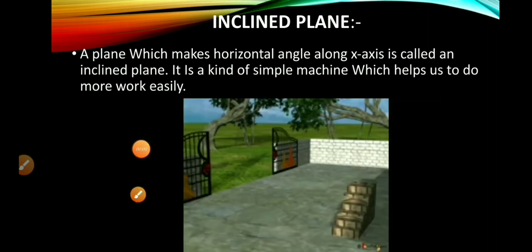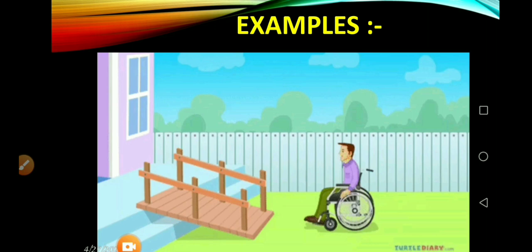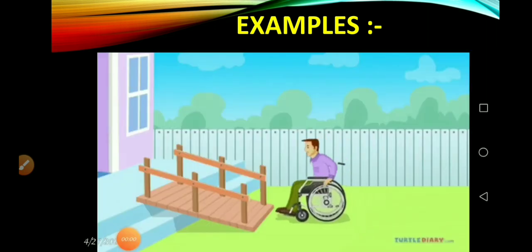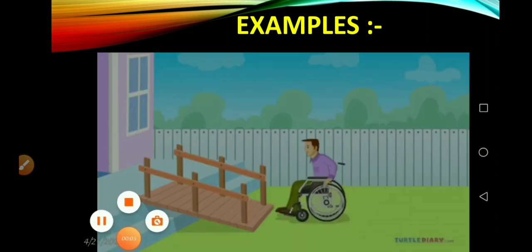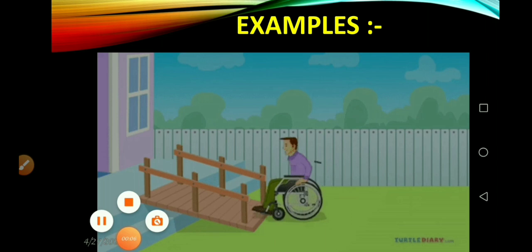Another example of inclined plane: In the second slide you see that a wheelchair carrying a patient can be easily pushed up on a slope in a hospital. In hospitals there is a ramp or slope for wheelchairs. This ramp is also an inclined plane.